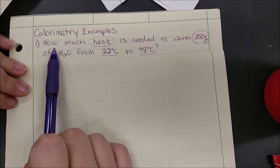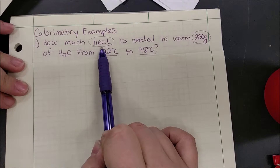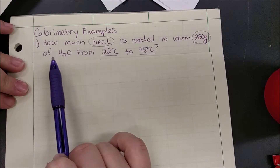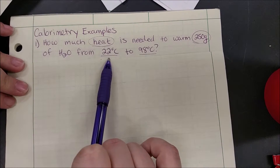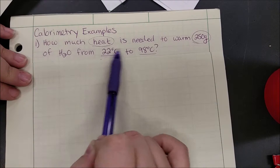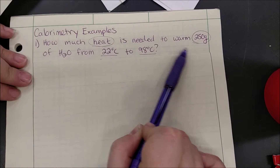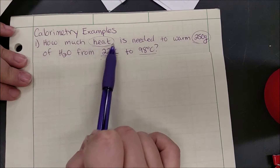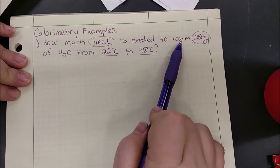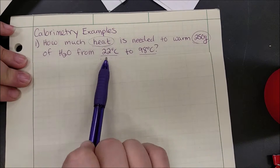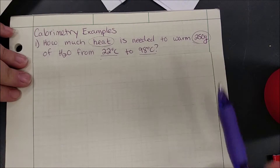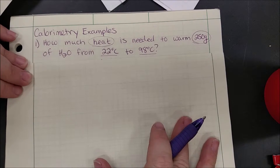Looking at our first example, it says how much heat or energy is needed to warm 250 grams of water from 22 to 98 degrees Celsius. We are looking at a change in temperature, we have a mass, and we are looking for heat. The key thing is it says it's warming, so our temperature is going up, meaning our change in temperature will be positive.